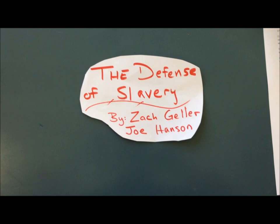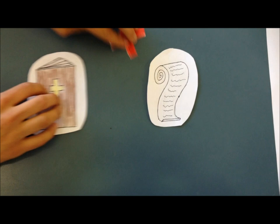The Defense of Slavery by Zack Geller and Joe Hanson. With the cotton boom in the 1790s, southern plantation farmers tried to find justifications for slavery. They found this in the Bible and the Constitution.